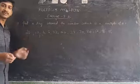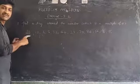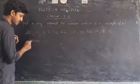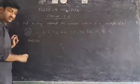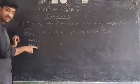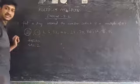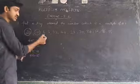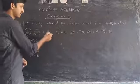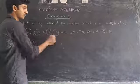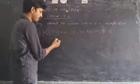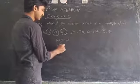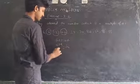20 is in the 4 table — 4 into 5 is 20 — so it is a multiple of 4. 12 is also a multiple of 4 because 4 into 3 is 12. 6 is between 4 and 8 in the 4 table, so 6 is not a multiple of 4. 32 is a multiple of 4 because 4 into 8 is 32. 44 is a multiple of 4 because 4 into 11 is 44. 38 is not a multiple of 4 because 4 into 9 is 36 and 4 into 10 is 40.